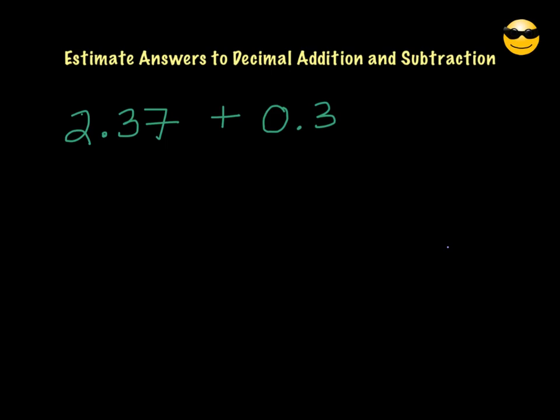And then you can see in our problem, we have 2 and 37 hundredths plus 3 tenths. So we have numbers that don't have zeros in decimal places. And when we round, we like to have nice whole numbers. So in order to get an estimate to this addition problem, we need to do some rounding.